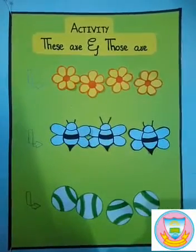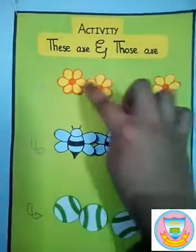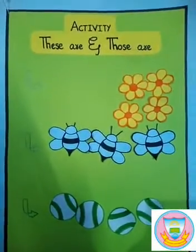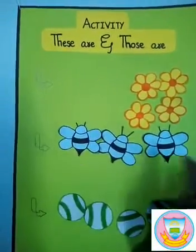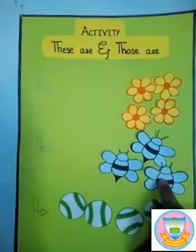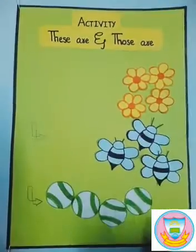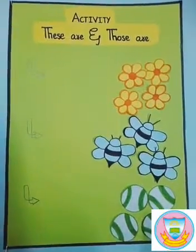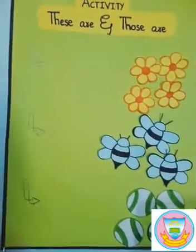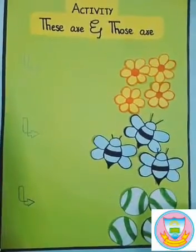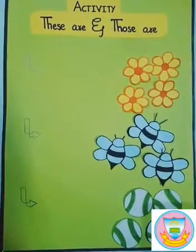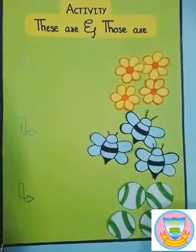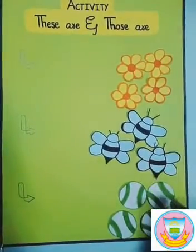If these are far from the arrow, then we say 'those are flowers' because they are far from the arrow. If bees are also far from the arrow, then we say 'those are bees.' Similarly, if bowls are far from the arrow, then we say 'those are bowls.' So students, if things are near to the arrow we say 'these are flowers, these are bees, these are bowls,' and if far, we say 'those are flowers, those are bees, those are bowls.'